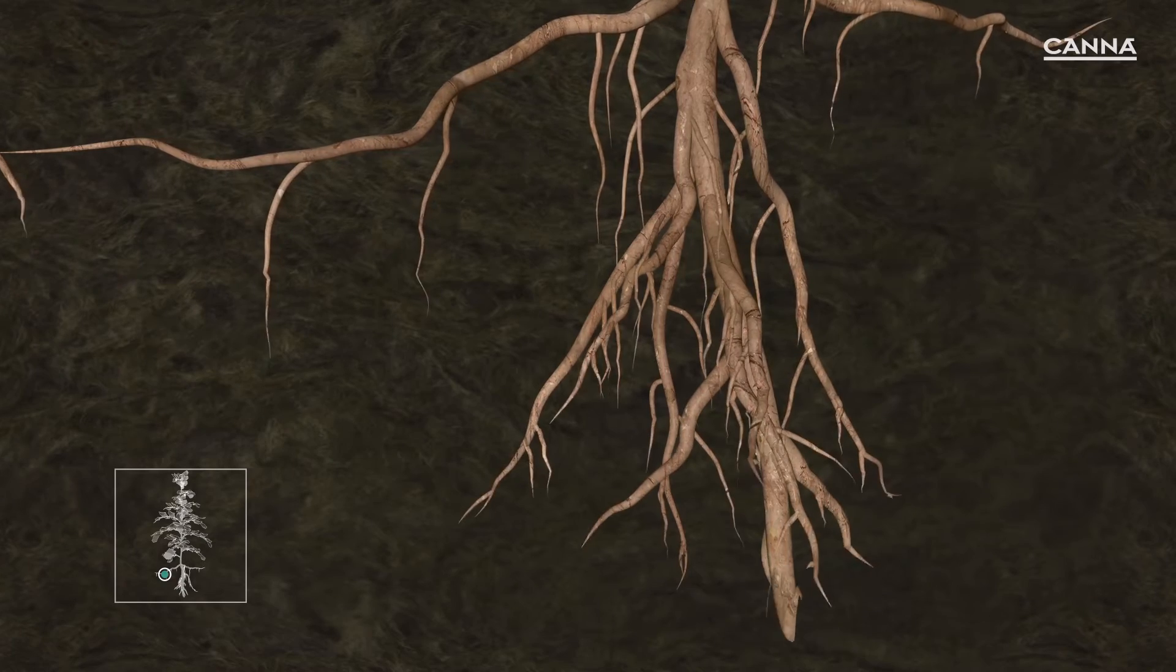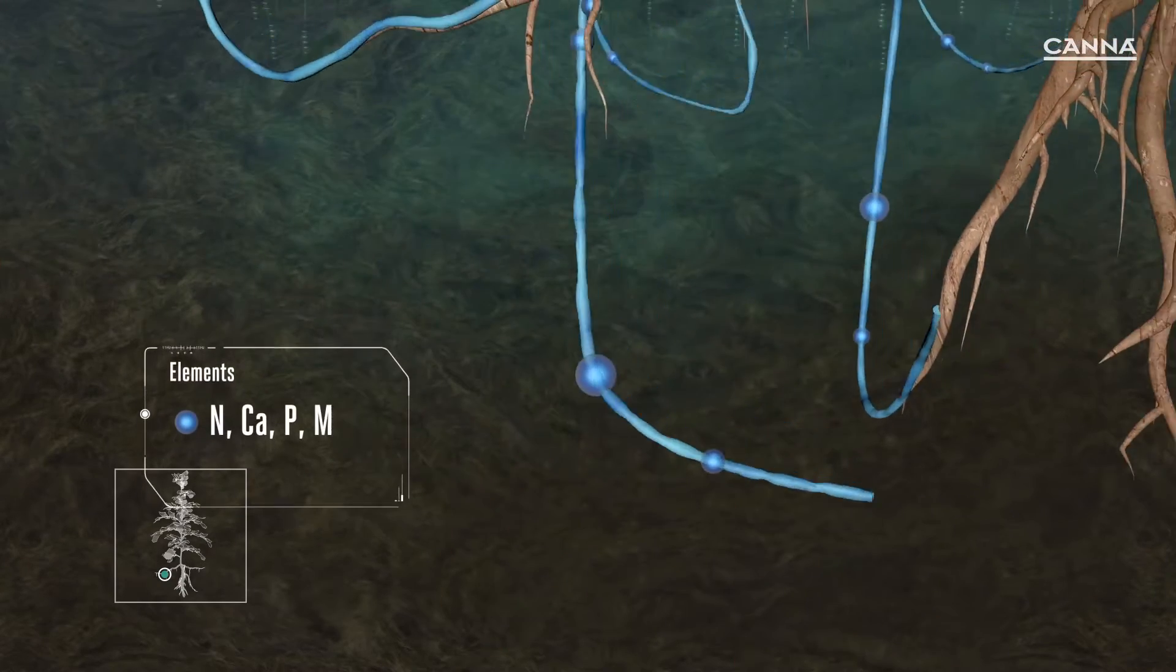More and more roots and branches appear. Together, they form the root system.